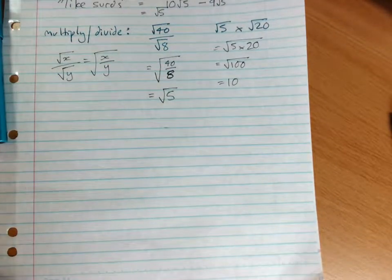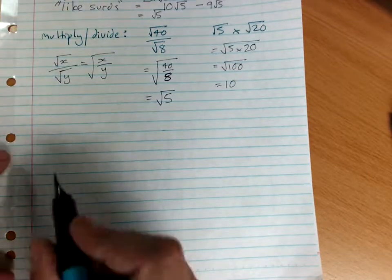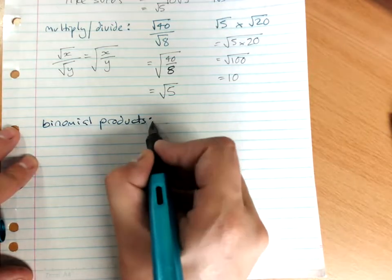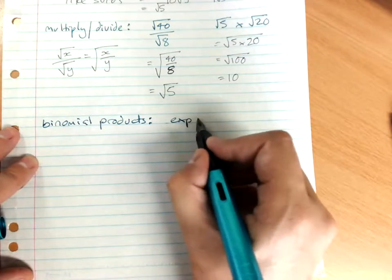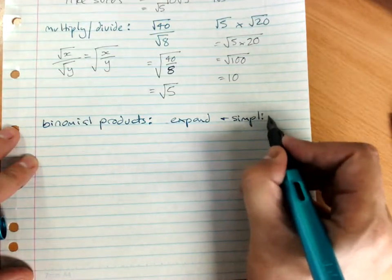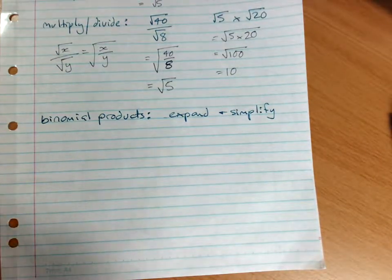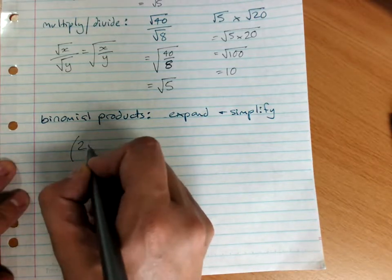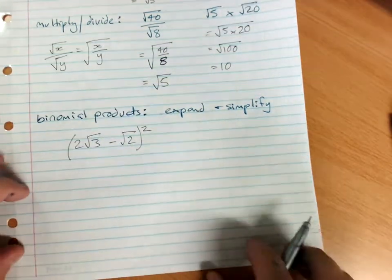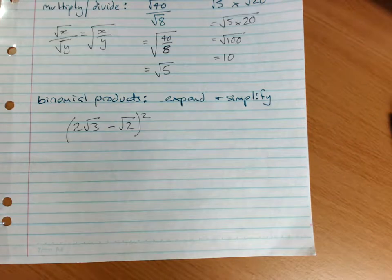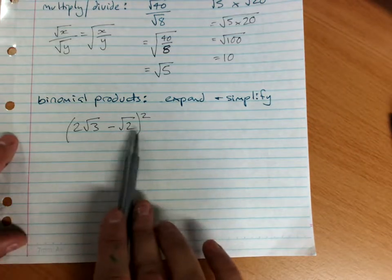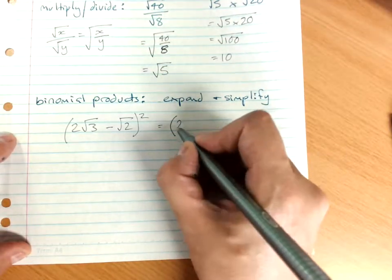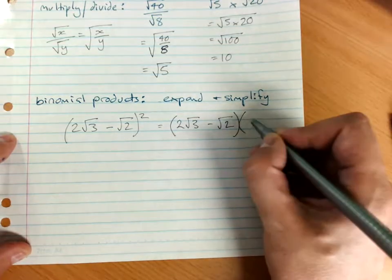We need to be able to manage binomial products with surds. And we'll go with brackets squared. Remember, if you've got squared brackets with a sum or a difference inside them, you're going to need FOIL. Write two copies of the brackets.